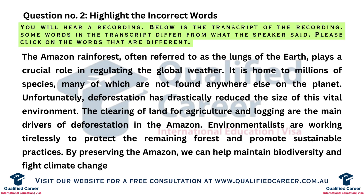The Amazon rainforest, often referred to as the lungs of the Earth, plays a crucial role in regulating the global climate. It is home to millions of species, many of which are not found anywhere else on the planet. Unfortunately, deforestation has drastically reduced the size of this vital ecosystem.